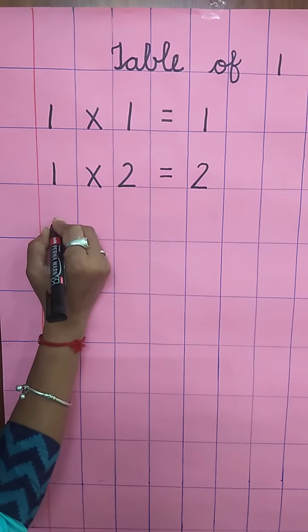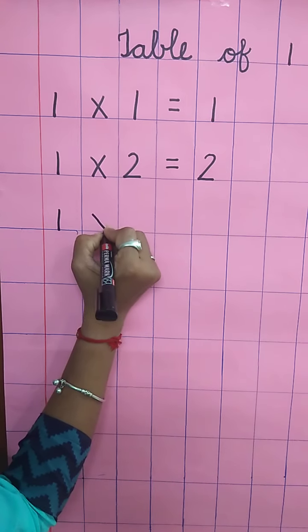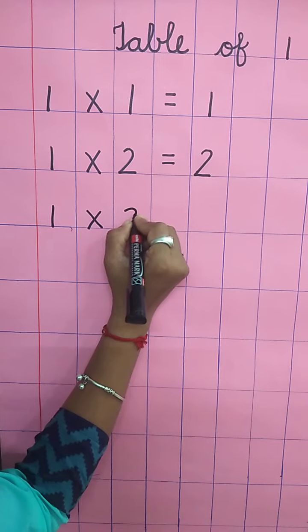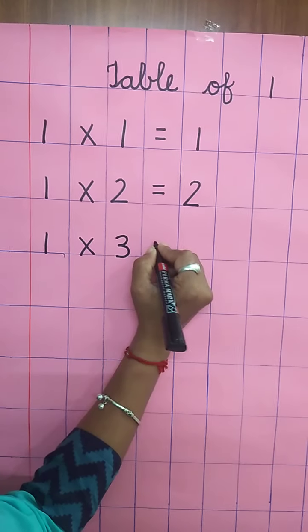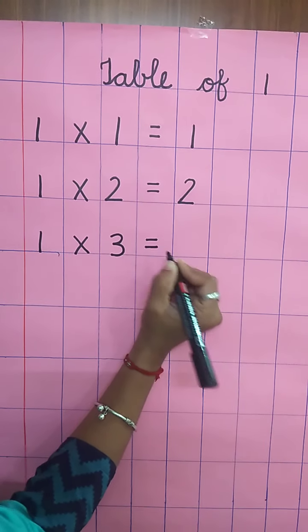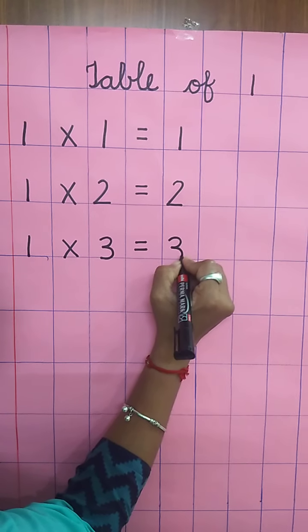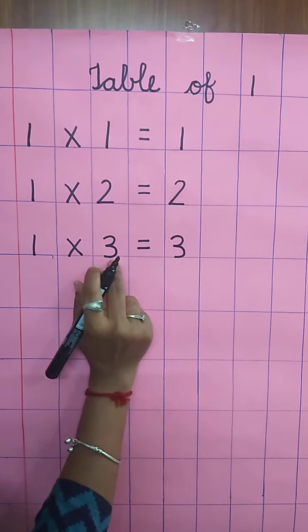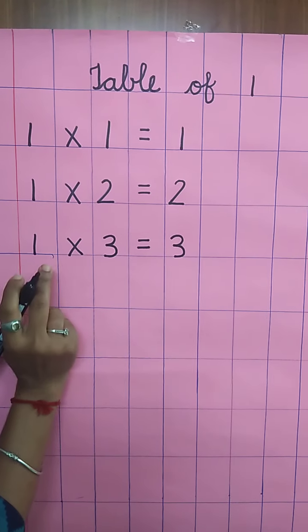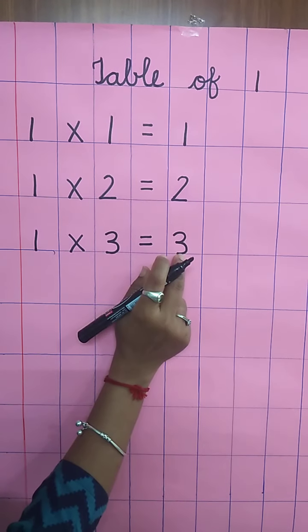Again, write down one. Multiplying sign. Write down three. Equal sign. And write down three. One three's are three. Speak and write, children. One three's are three.